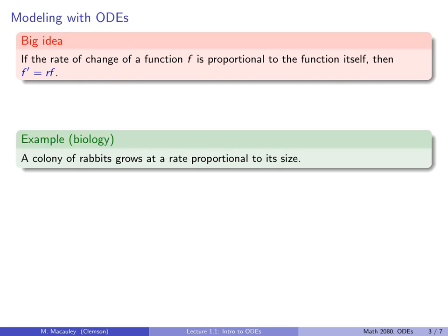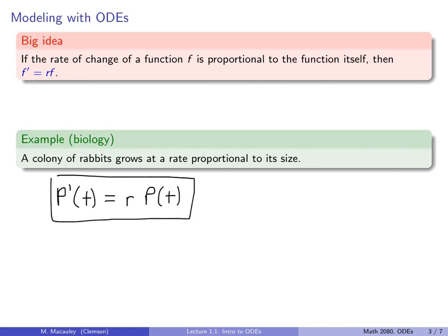Let's take an example from biology. Suppose we have a colony of rabbits that grows at a rate proportional to its size. In this case, we have an equation of the form p prime of t equals some rate r times p of t. This is the differential equation. If you plot this, this is the same exponential growth from the previous slide — our initial population is going to grow exponentially. We will see this soon.